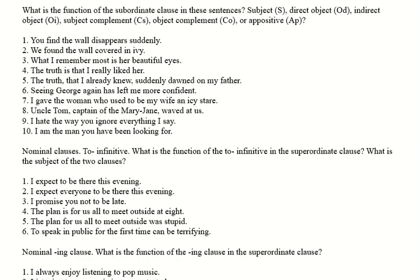Number four: 'the plan is for us all to meet outside at eight.' This is a sentence about the plan. 'The plan' is obviously the subject of 'is.' The subject of 'to meet' is 'us all.' Because we've got the verb to be, 'for us all to meet outside at eight' can only be a subject complement — we have subject, verb to be, so we need a subject complement. And in number three, the subject of 'not to be late' is also 'I' — it's I who's not going to be late.